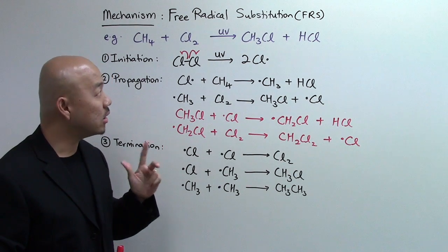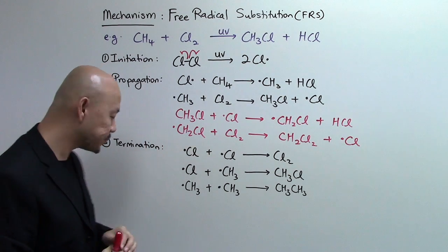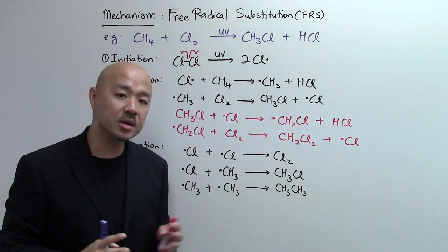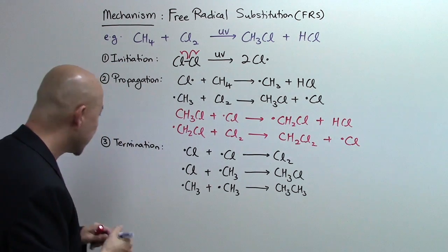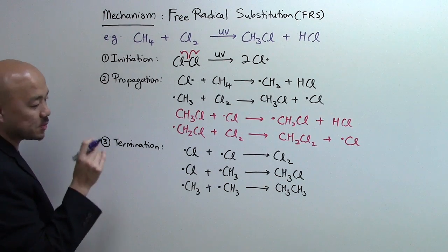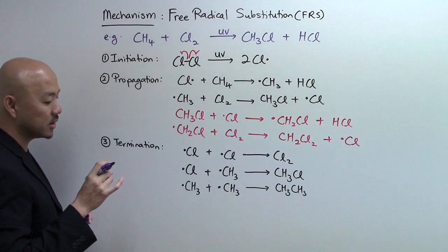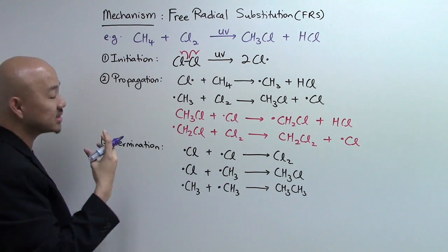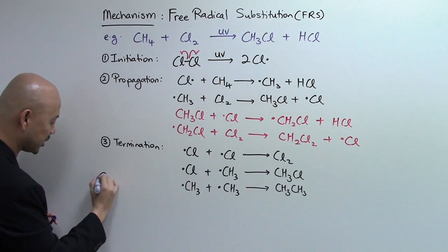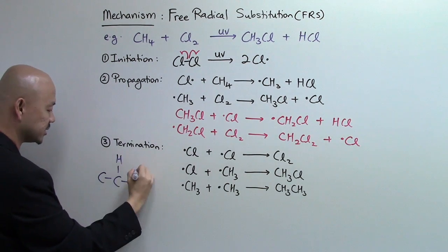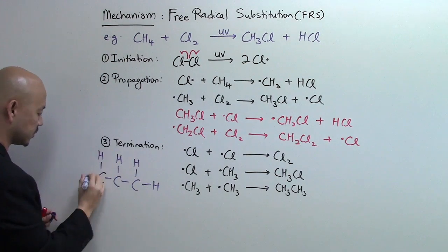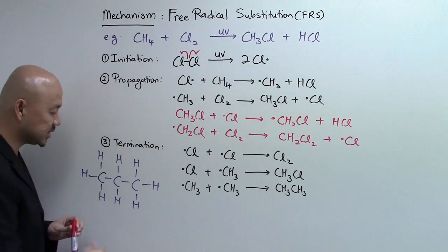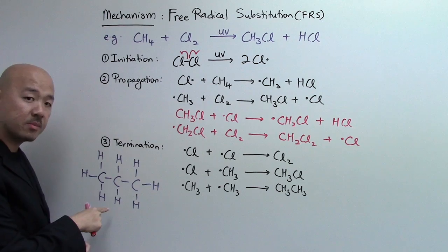The second problem of free radical substitution in order to get the mono-chlorinated product is what we call positional isomers or positional issues. I'm going to show you an example. This positional issue will only happen if you have a longer chain alkane and you'll start with propane. Let me draw you a molecule of propane.